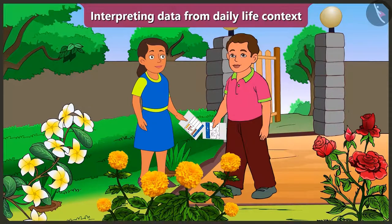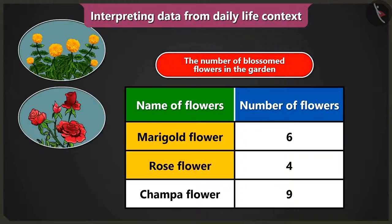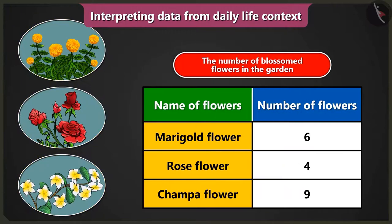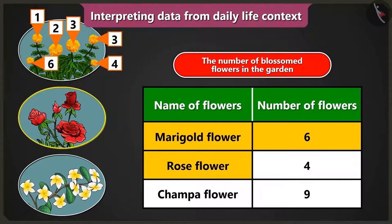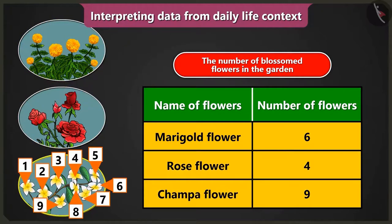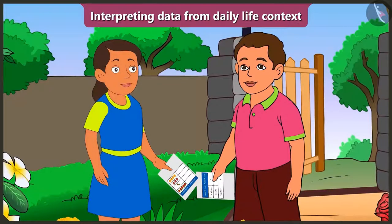What have you understood? I understood that there are three kinds of flowers — marigold, rose, and chumpa — that have blossomed in the garden. And there are six marigold flowers, four rose flowers, and nine chumpa flowers that have blossomed in the garden. Thank you, Bunty. You have really explained the data in the table very well.